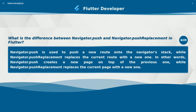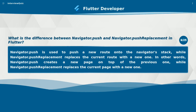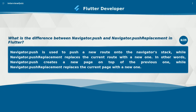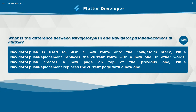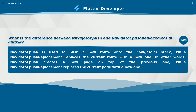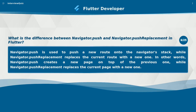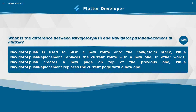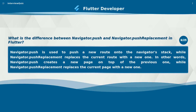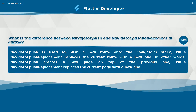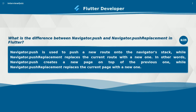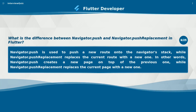What is the difference between Navigator.push and Navigator.pushReplacement in Flutter? Navigator.push is used to push a new route onto the navigator's stack, while Navigator.pushReplacement replaces the current route with a new one. In other words, Navigator.push creates a new page on top of the previous one, while Navigator.pushReplacement replaces the current page with a new one.